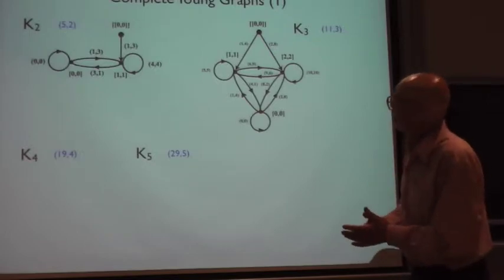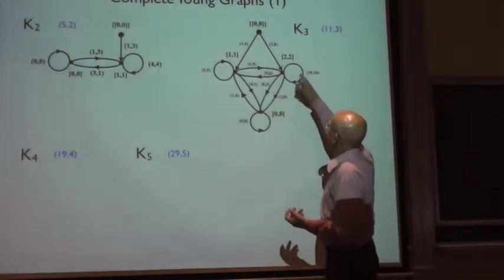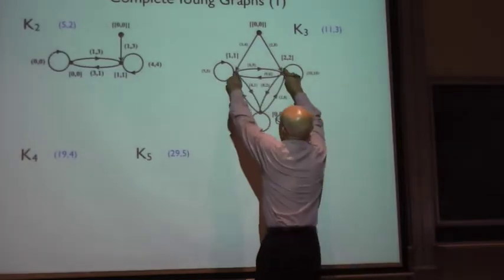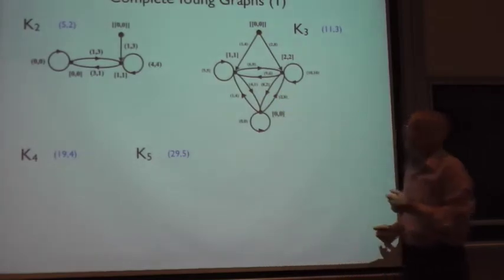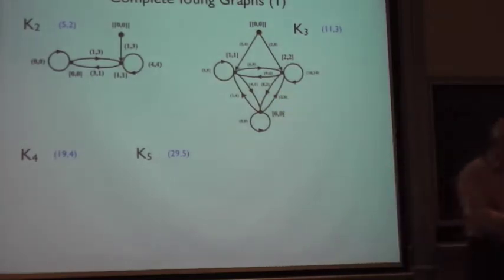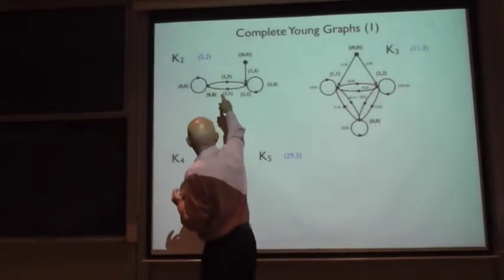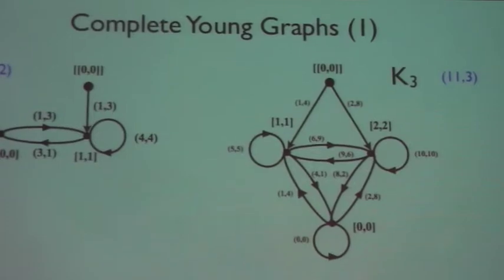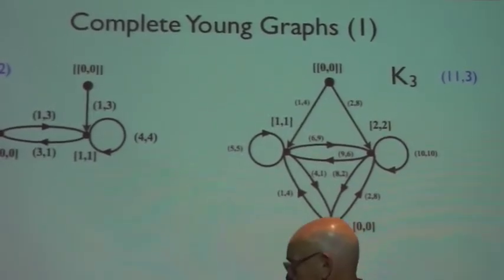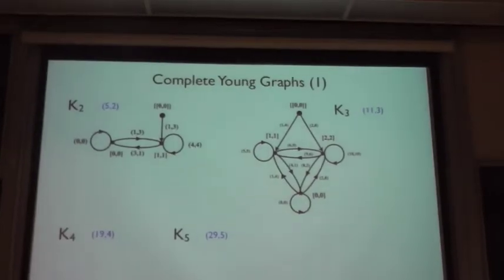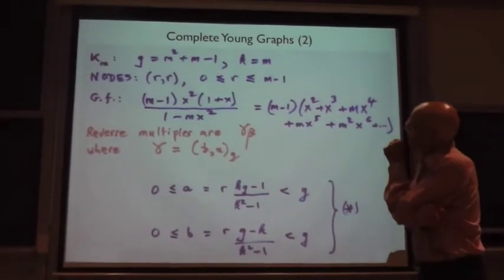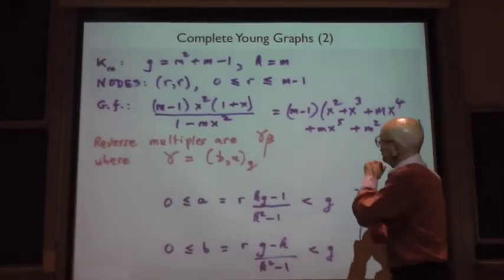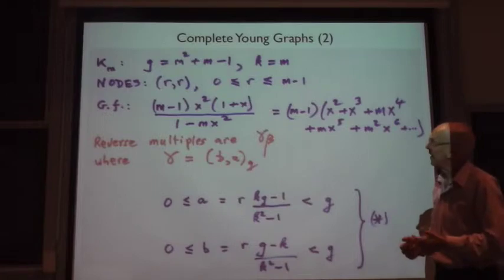At the other extreme, the graphs with the maximal number of edges are the complete graphs. So here's K3. Apart from the starting node, it's got three other nodes, and you have edges between every possible pair of nodes. So K2 is the base 5 multiplied by 2 example I already showed you. K3 doesn't appear until base 11 multiplied by 3, and you get that. You get K4, K94, K5, and you can prove that if the base G is the form N squared plus N minus 1, and the multiplier is N, then you get KM.